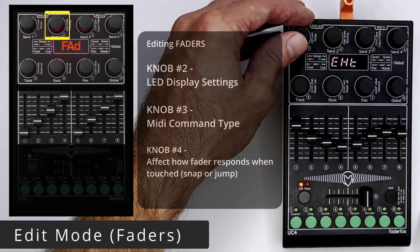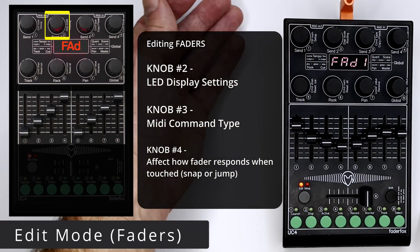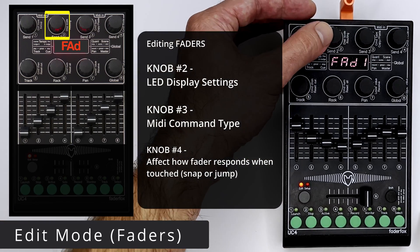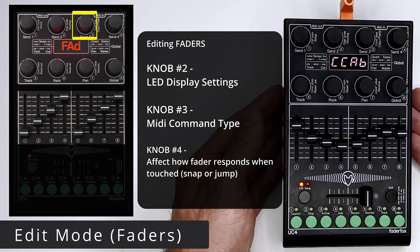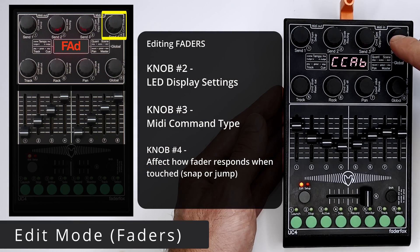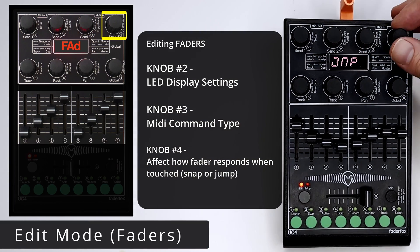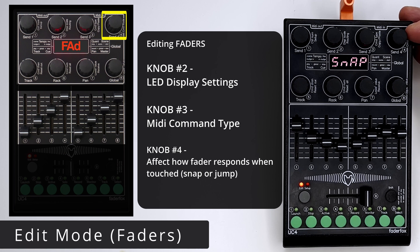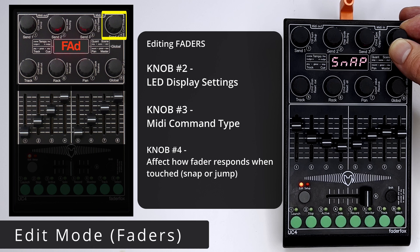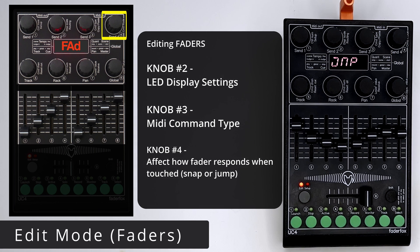For faders, we have some of the options seen before for the display control setting and command types, whereas encoder 4 gives you two options unique specifically to faders and their response: snap, which waits for physical and software positions to align, or jump for immediate command execution, making instant adjustments in the software.